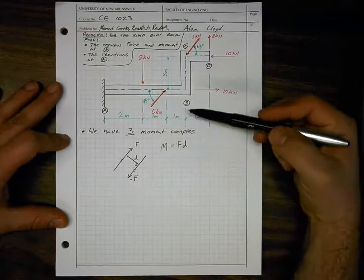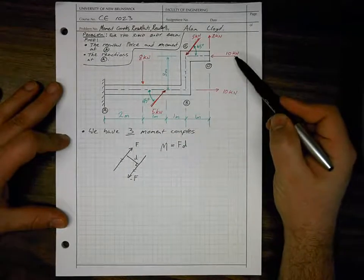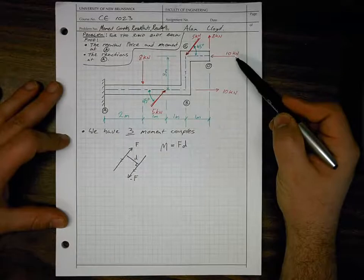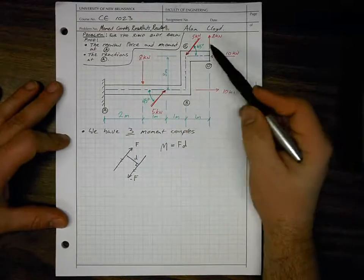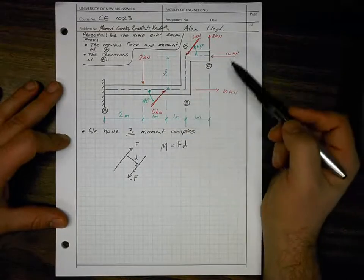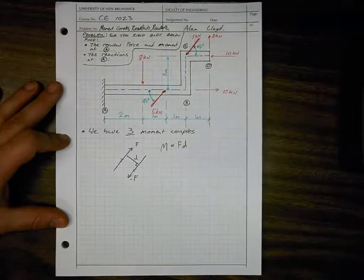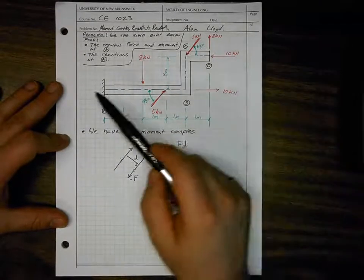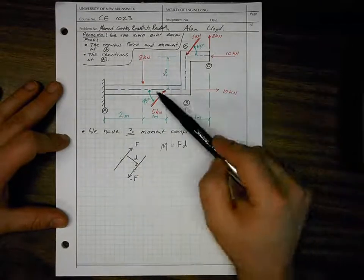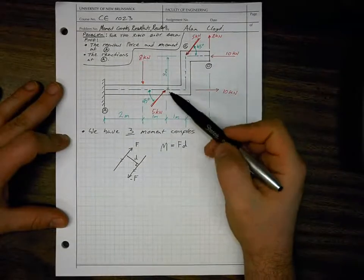Using that principle, once we have identified the three moment couples — the 10 kN force acting right and the other acting left, 8 kN up and 8 kN down, and 5 kN forces at a 45-degree angle — we can quickly solve this problem without having to divert to sum of moments about a known point. The only challenge is determining the distances between our moment couples.